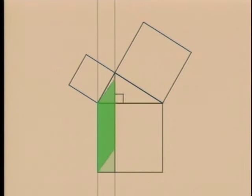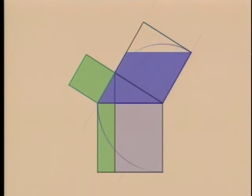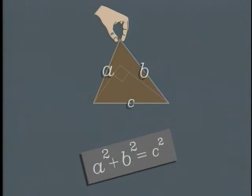Remember the Pythagorean Theorem? For a right triangle, the square on the hypotenuse equals the sum of the squares on the other sides. But if it's not a right triangle, this is no longer true.